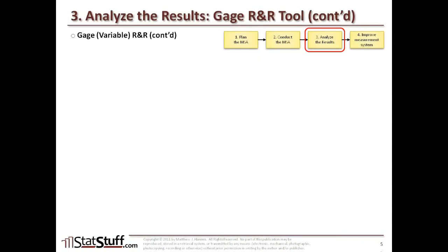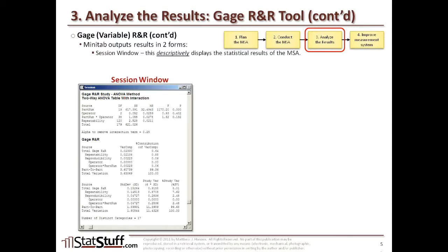Now let's look at the two different types of output created when you run that test in Minitab. When you run the gauge R&R study within Minitab, it's going to give you two different types of output. First, it will give you a session window — this is the descriptive display of the statistical results of the MSA.